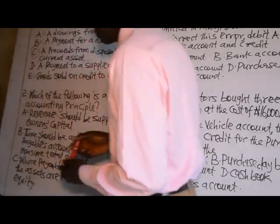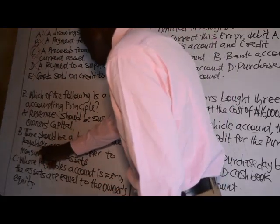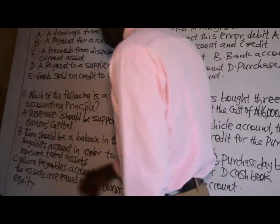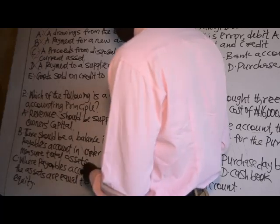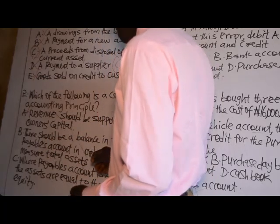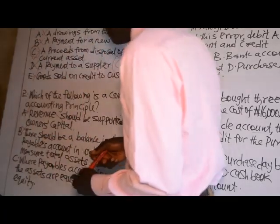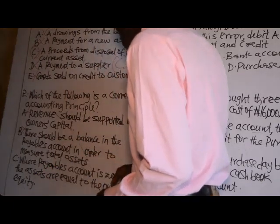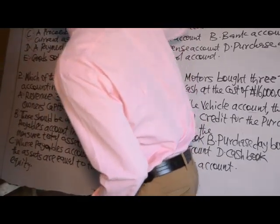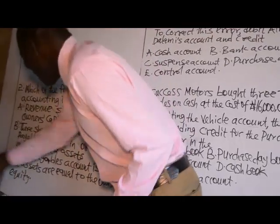Option B: there should be a balance in the payables account in order to measure total assets. There is no correlation between the payables account balance and measuring total assets, so the answer cannot be B. Option C: where the payable account is zero, the assets are equal to the owner's equity. Let me demonstrate this.